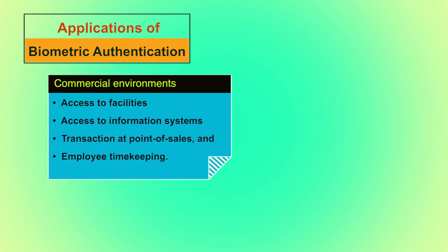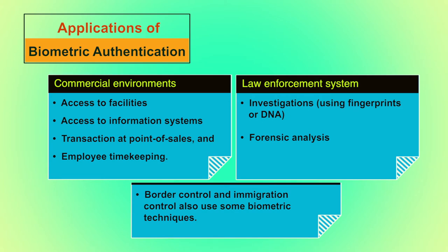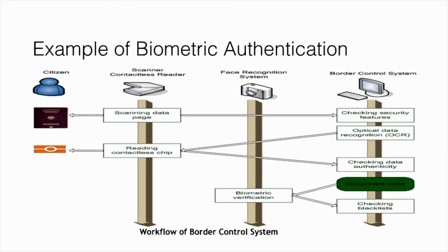Applications of biometric authentication: in commercial environments, these include access to facilities, access to information systems, transactions at point of sales, and employee timekeeping. In law enforcement, they include investigations using fingerprints or DNA and forensic analysis. Border control and immigration control also use biometric techniques. For example, a typical e-gate border control system scans an e-passport using a contactless reader, checks security features, reads the chip for data authentication, and finally performs biometric verification via face recognition. If everything matches, the document is valid and the citizen is allowed through.